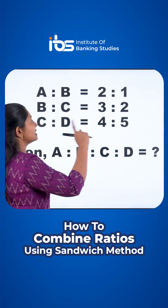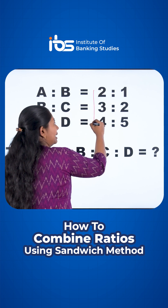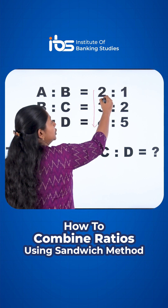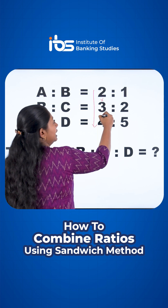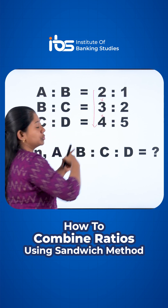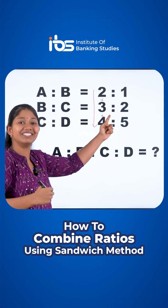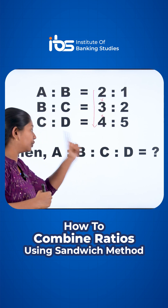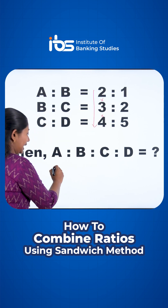The first step is to multiply the vertical. 2 into 3 into 4. 2 into 3 is 6, and 6 into 4 is 24. That means we will add A.